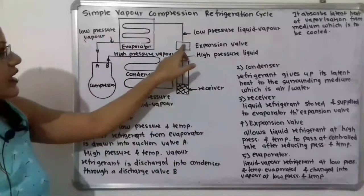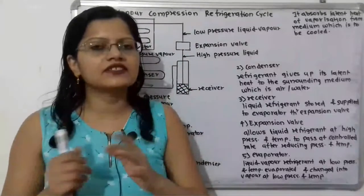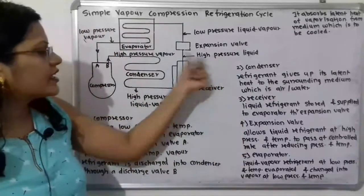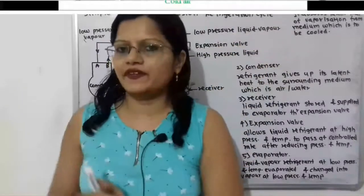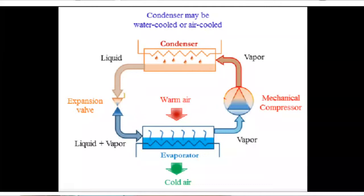Now we move to the evaporator. In the expansion valve there is a slight decrease in pressure and temperature of the liquid refrigerant, converting it into a low pressure, low temperature liquid-vapor refrigerant. This low pressure, low temperature liquid-vapor refrigerant enters the evaporator, where again a phase change process takes place — the liquid-vapor refrigerant is completely converted into vapor refrigerant.